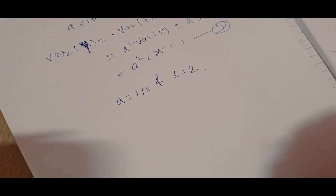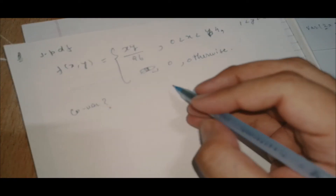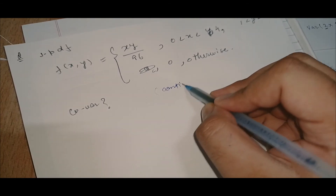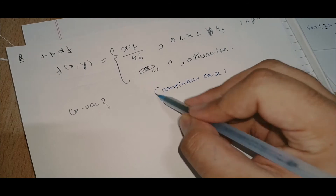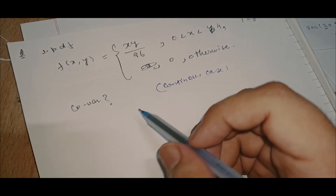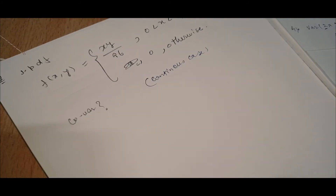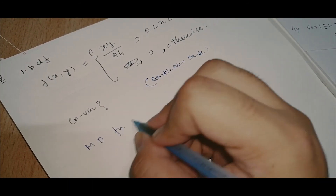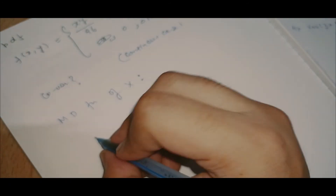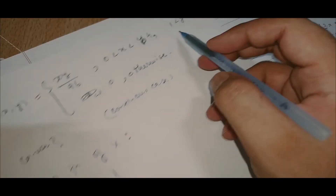Next we deal with the last topic of this module: covariance. This problem involves continuous data. The joint probability density function is given and we need to find the covariance. The very first step is to find the marginal density functions of X and Y.